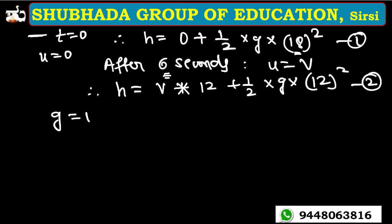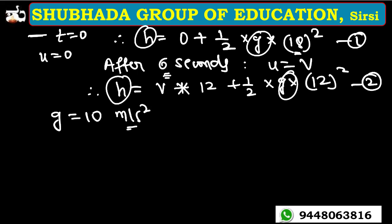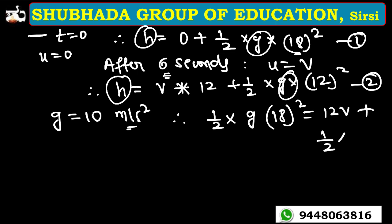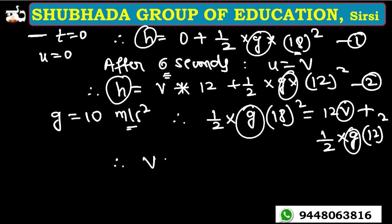Taking g equal to 10 meters per second squared and equating the two distances — since both balls cover the same distance — we get: half g into 18 squared equals 12V plus half g into 12 squared. Substituting g equal to 10, we solve and get V equal to 75 meters per second. This is option B and the right answer.